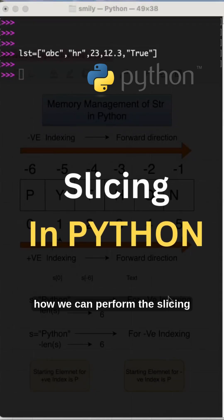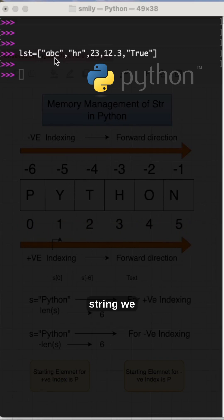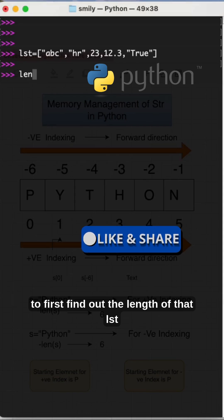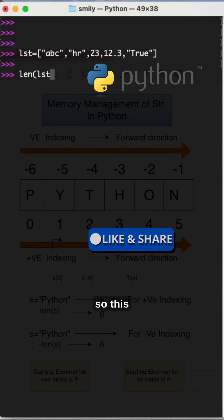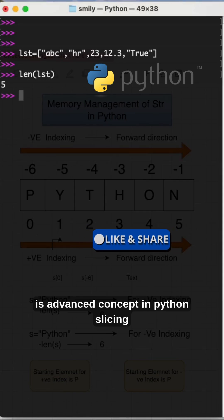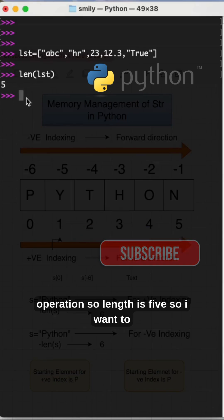How we can perform the slicing operation with list elements. Here this is the list object which will consider a string, we have the string in float and boolean type. So I want to first find out the length of that LST. So this is advanced concept in Python slicing operation, length is 5.